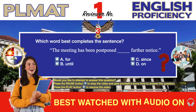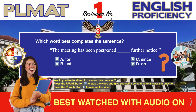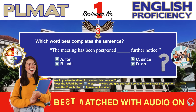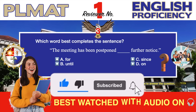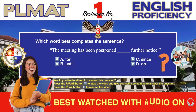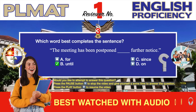Question number three. Which word best completes the sentence? 'The meeting has been postponed, blank, further notice.' A. For. B. Until. C. Since. D. On. The correct answer is B. The word that best completes the sentence is 'until.' Until is appropriate because it indicates that the postponement will last up to the point when further notice is given.